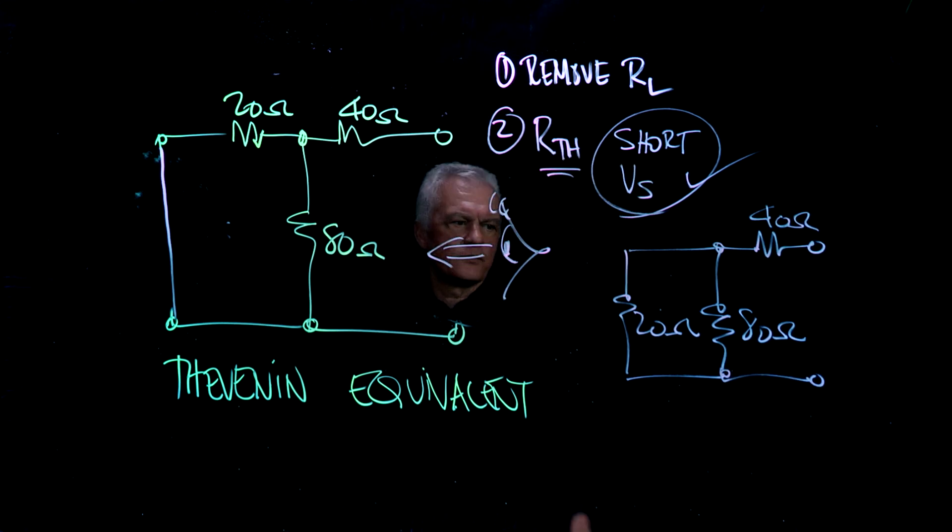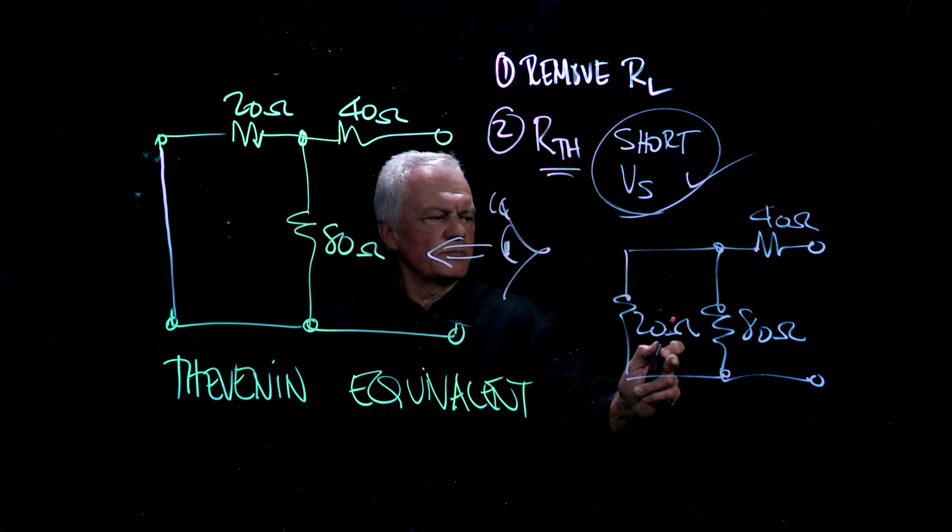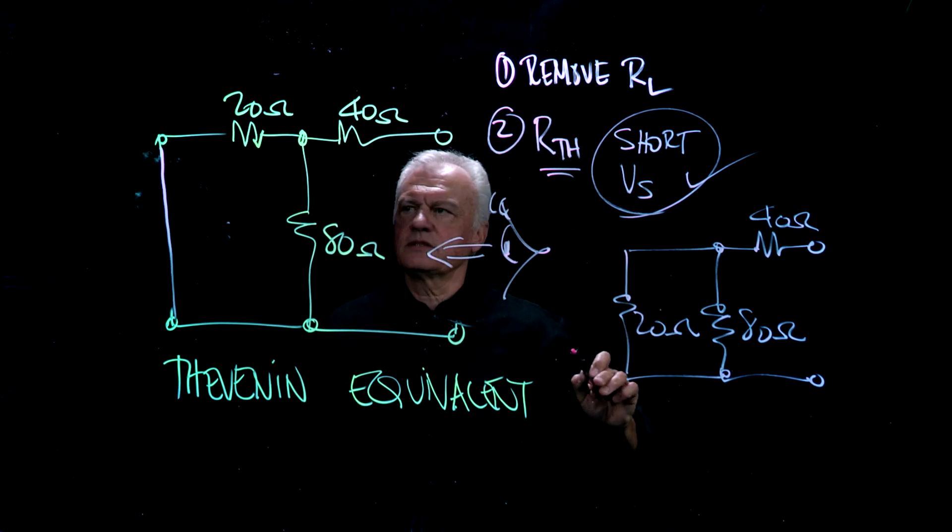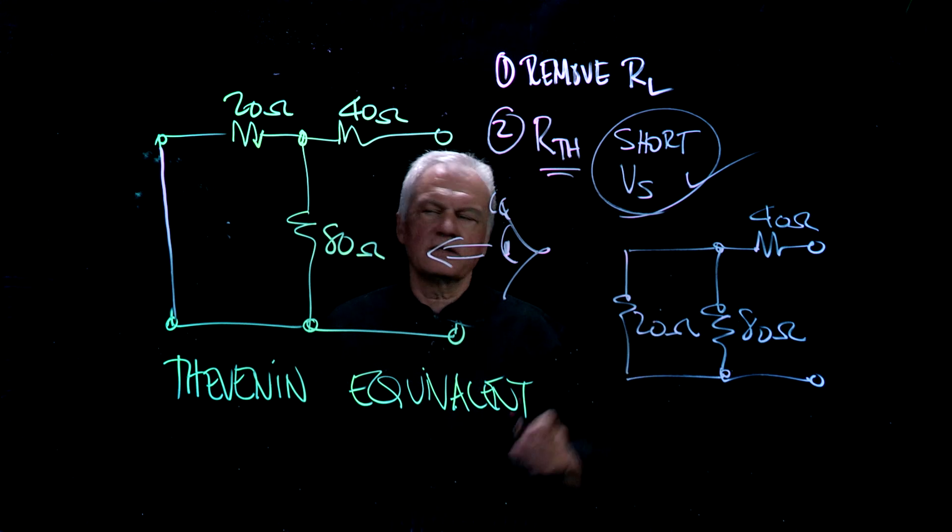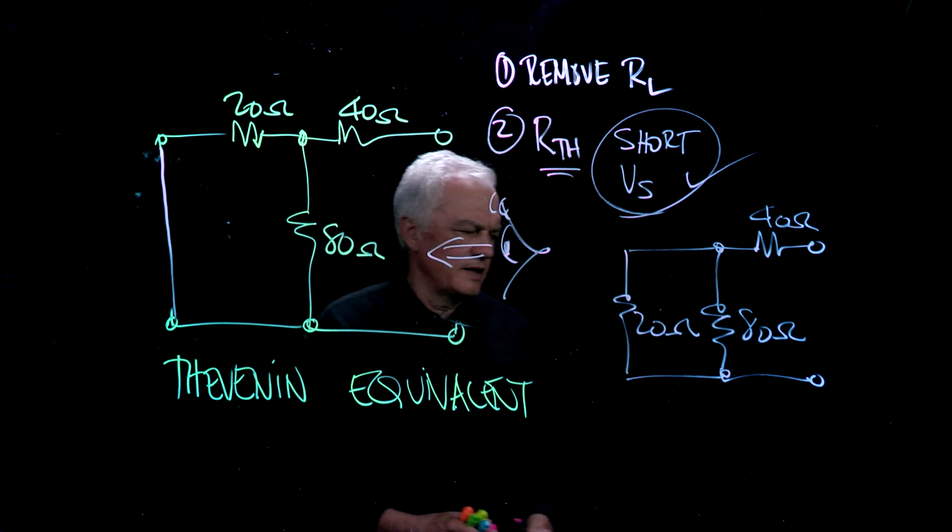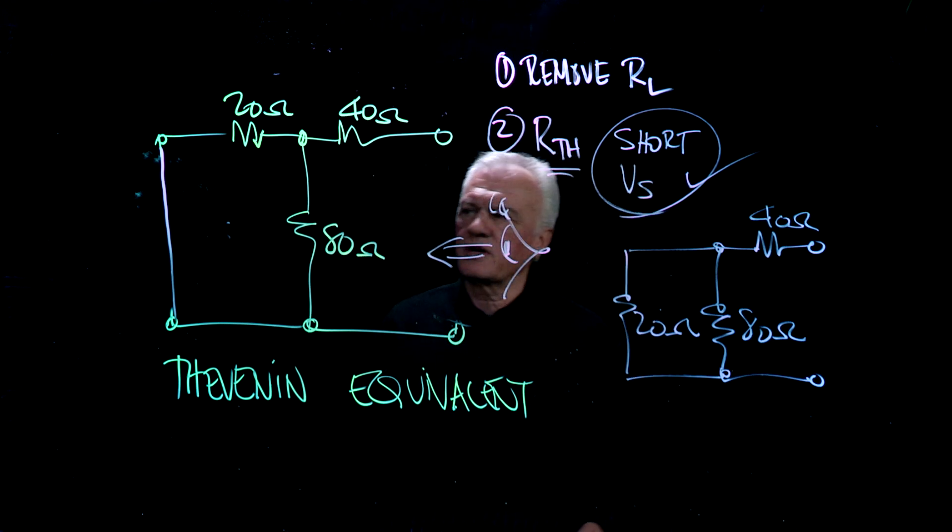First rule, resistors in parallel, the resulting resistance now seen with two in parallel has to be less than the 20. So when you're doing your calculations and it comes up to more than 20, you've got a problem.